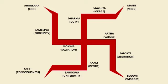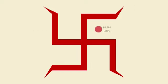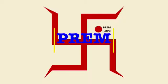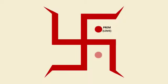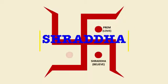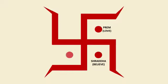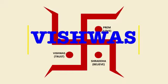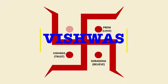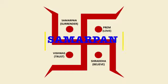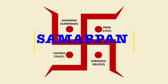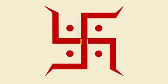Lastly, the Swastik is completed by bindus, or dots, to symbolize the Alankar of life, representing: First, Brahim, or love. Second, Shraddha, or belief. Third, Vishwas, or trust. And fourth, Samarpan, or surrender.